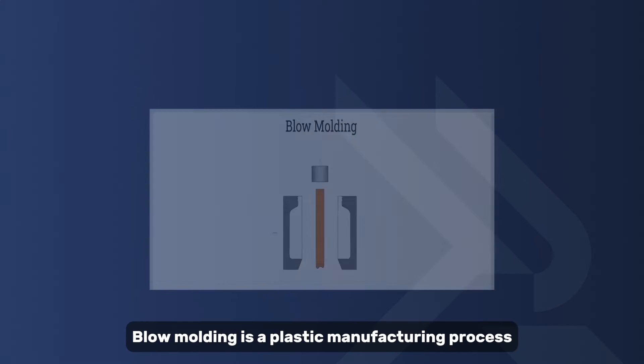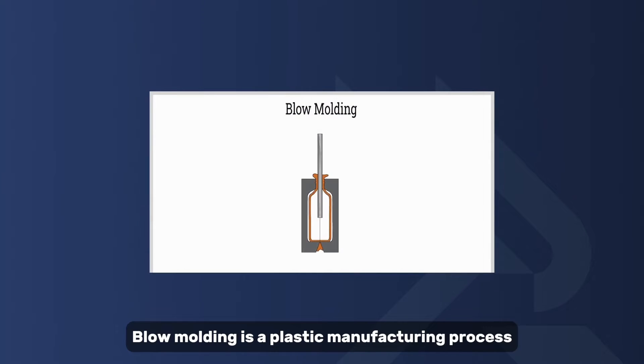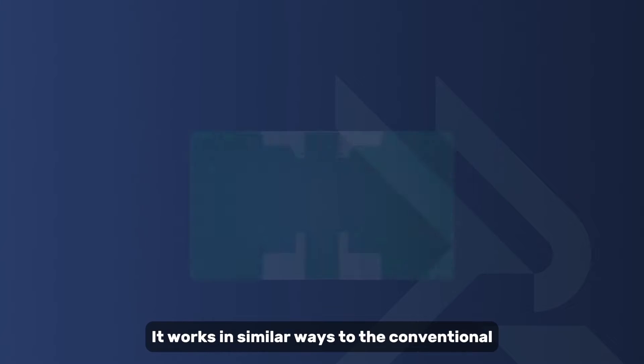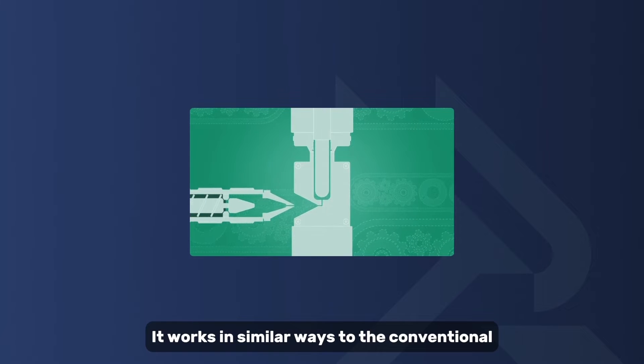What is blow molding? Blow molding is a plastic manufacturing process that involves blowing heated plastic material into a mold cavity to create hollow objects. It works in similar ways to the conventional glassblowing technique.